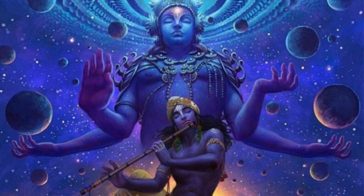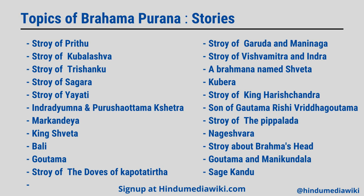Topics in Brahma Puran: There are many important stories included in Brahma Puran. The list of stories includes: Story of Prithu, Kubalashwa, Trishankhu, Sagar, Yayati, Indra, Dhyumna and Purushottam Kshetra, Markandeya, King Shweta, Bali, Gautam, the Doves of Kapota Tirtha, Garud and Mananga, Vishwamitra and Indra, a Brahman named Shweta, Gubir, King Harish Chandra, Rishi Vridha Gautam, the Pippalad, Nageshwar, the story on Brahma's head, Gautam and Mani Kundal, and Sage Kandu.